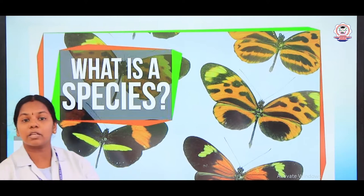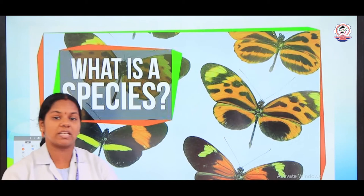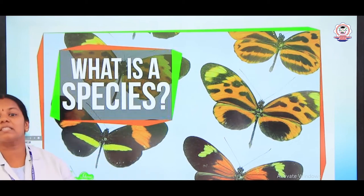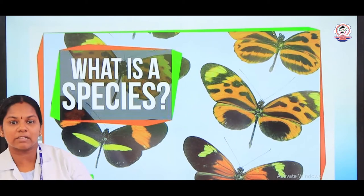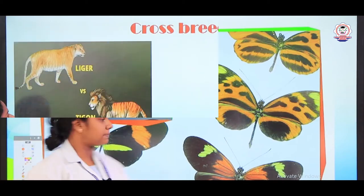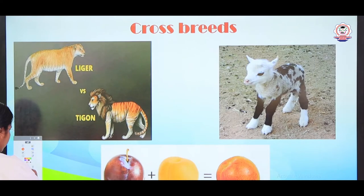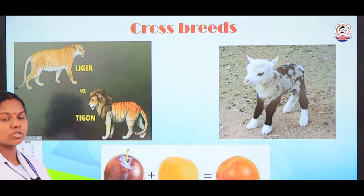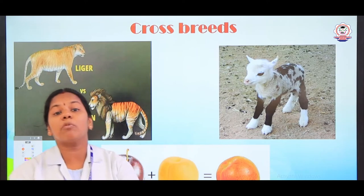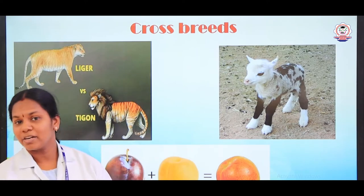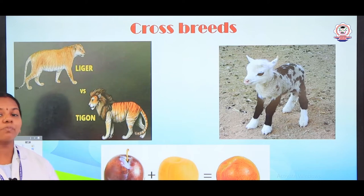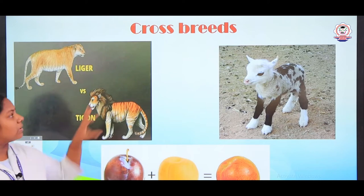A human can interbreed with another human to produce the next generation. The species is a group of organisms with similar characters. I told you that organisms of the same species interbreed among themselves only. But due to the advancement in technology, cross breeds are also possible.